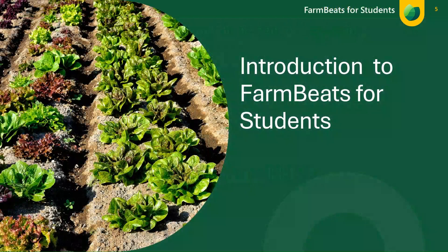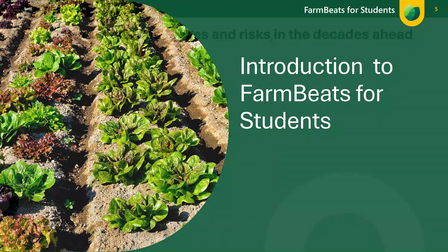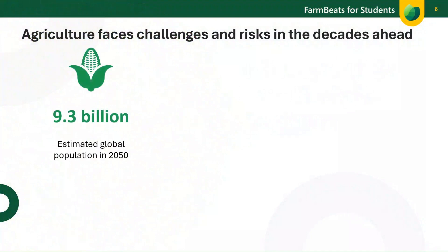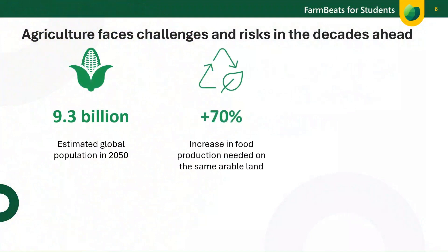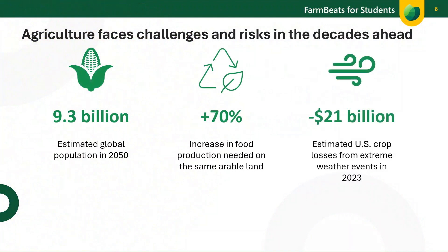Let's set the stage for why FarmBeats for Students and what the program entails. As the world's population continues to grow, it's projected to reach 9.3 billion by 2050. The amount of farmable land is decreasing, and we're currently using two times the resources the Earth can replenish. Without discovering new ways to produce more nutritious food, the number of hungry people worldwide could grow exponentially. Agriculture is also among the most impacted by climate change, and farmers depend on predictable weather — unexpected weather events like high heat, floods, etc. really impact their ability to farm.